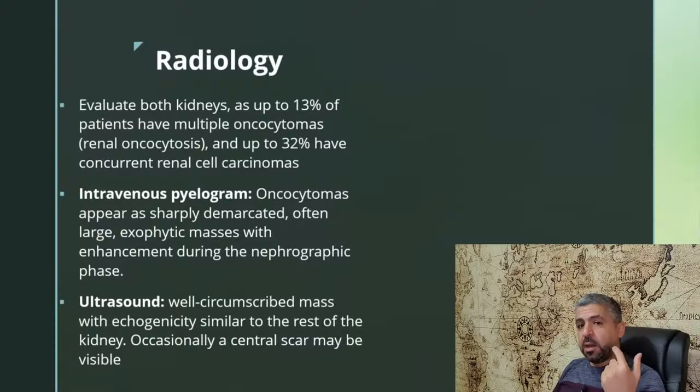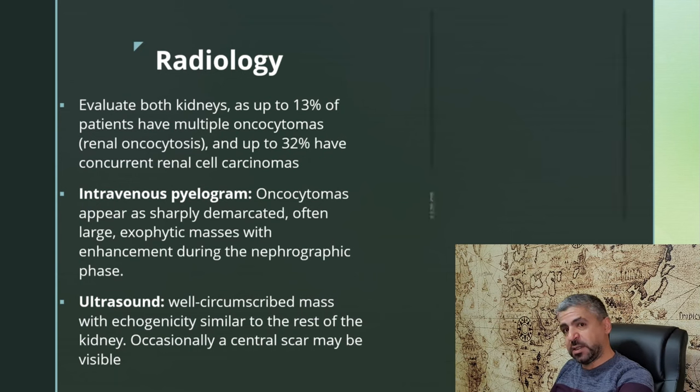Some features may help point toward oncocytoma. On ultrasound, evaluate both kidneys because 13% of patients may have multiple oncocytomas — called renal oncocytosis. Up to 32% of patients with oncocytoma also have renal cell carcinoma concurrently. On IVP or intravenous urogram, oncocytomas appear as sharply demarcated large exophytic masses that enhance during the nephrographic phase. On ultrasound, they appear as a well-circumscribed mass with echogenicity similar to the rest of the kidney — usually isoechoic — sometimes with a central scar.